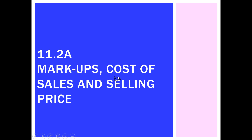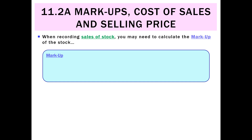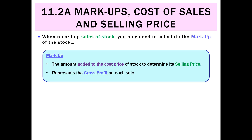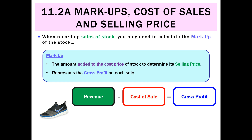In Year 12 Accounting you might need to calculate markups, cost of sales and selling prices. The markup of stock is basically the amount added to the cost price to determine the selling price, and for each unit of stock it represents the gross profit. For example, revenue less cost of sales equals the gross profit for one sale.